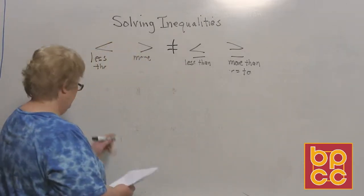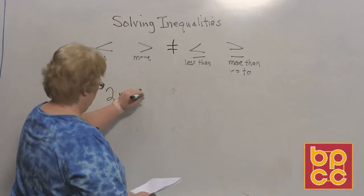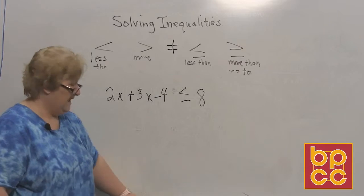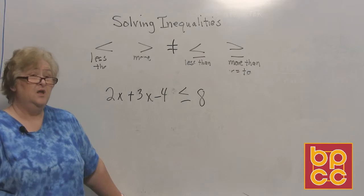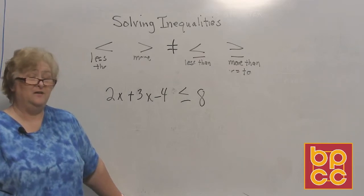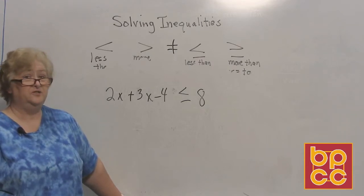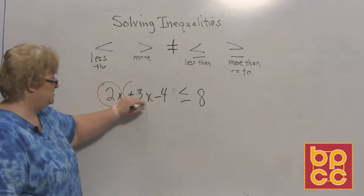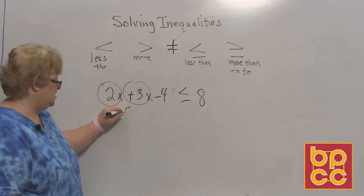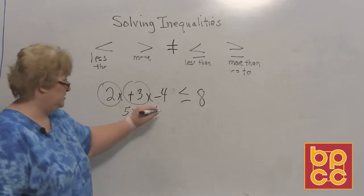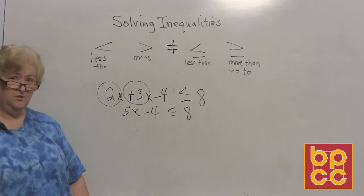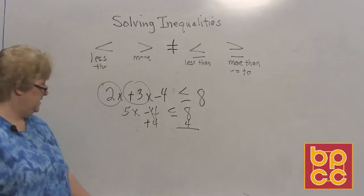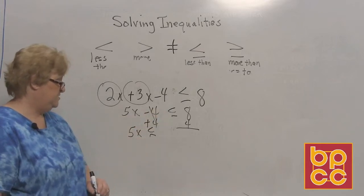Let's try: 2x plus 3x minus 4 is less than or equal to 8. I haven't made you combine like terms yet, so before we move anything, we've got to do that first. On the left side, combine 2x and 3x for a total of 5x minus 4, and we continue writing less than or equal to 8. Now move the 4 to the other side with a plus 4 to clear. We now have 5x is less than or equal to a positive 12.